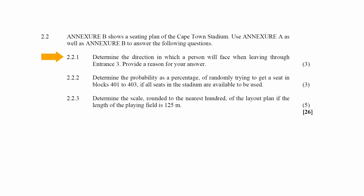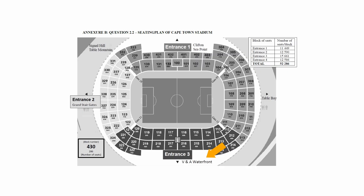In Question 2.2.1 you have to determine the direction in which a person will face when leaving through Entrance 3, and provide a reason for your answer. From the seating plan on Annexure B, if a person exits the stadium through Entrance 3 they will be facing the V&A Waterfront.